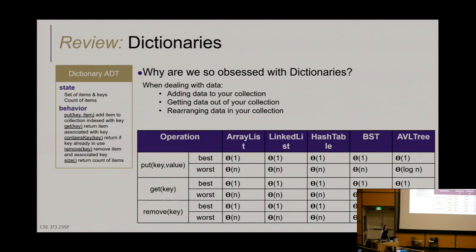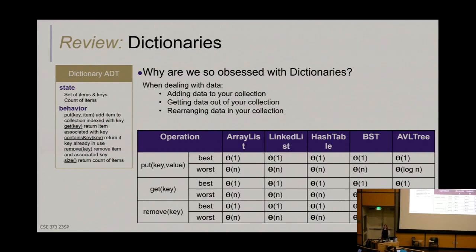If asked explicitly for the worst case runtime of a hash table, it would be O(n) — n collisions causing a linked list of size n hanging off one bucket, giving linear runtime. We'll give you explicit scenarios and expect you to ask whether something about the scenario prevents that from happening.